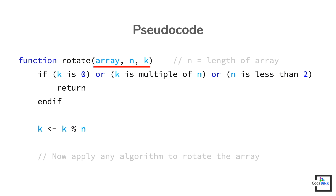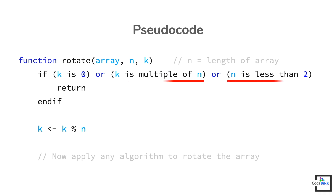Before you apply any algorithm, make sure that you actually need one. If the value of k is zero or a multiple of the length of the array, you will not require any rotation — the output will be the same as the input array. The same case applies when the array length is either zero or one, that is less than two. So you can return from here if any of these cases occur.